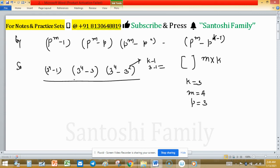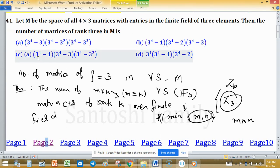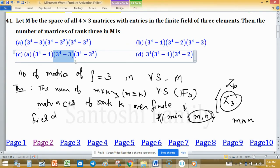So which option is giving this answer? 3 raised to the power 4 minus 1, times 3 raised to the power 4 minus 3, times 3 raised to the power 4 minus 3 squared—this option is true here, means option C is our right choice.